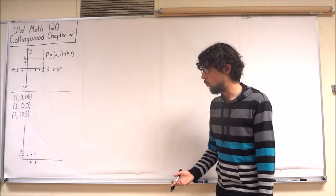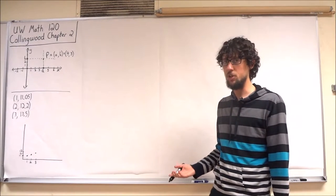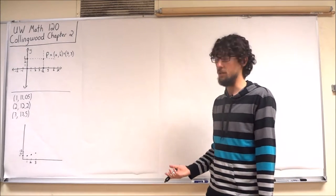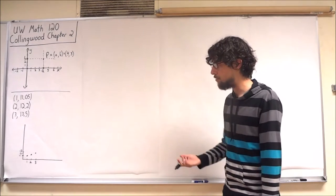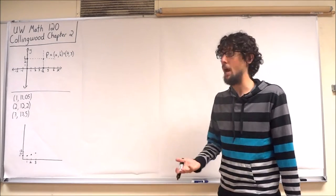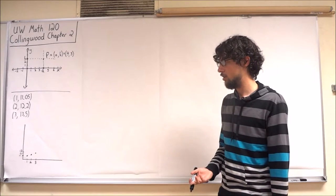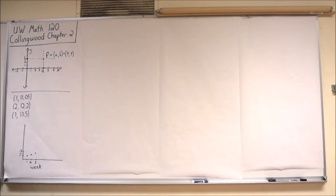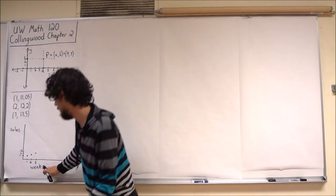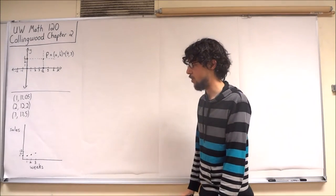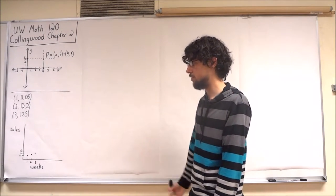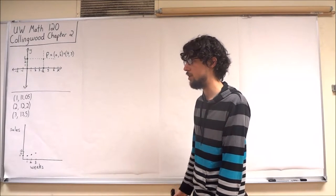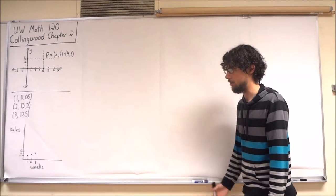Well, we should include some indication of the units involved and some labels of what we're actually talking about here. So I might label this by saying that my x-axis is representing the weeks—week number 1, week number 2, week number 3—and my y-axis is representing my sales.